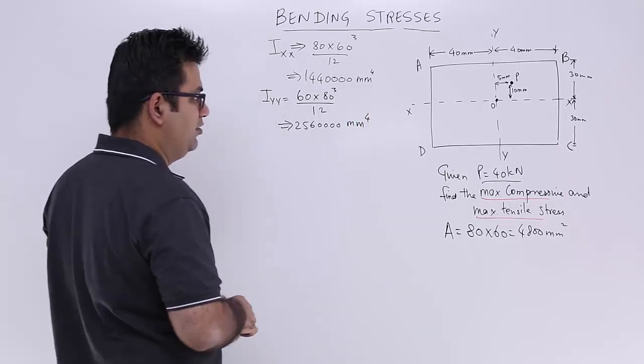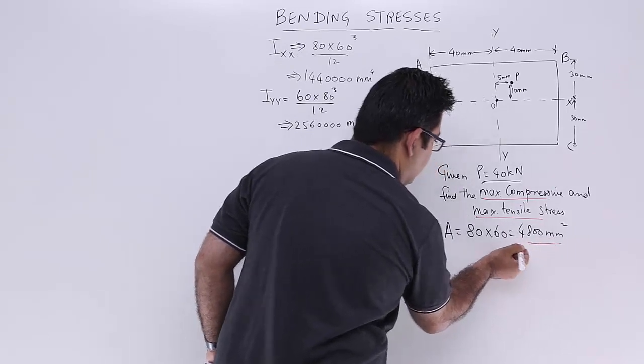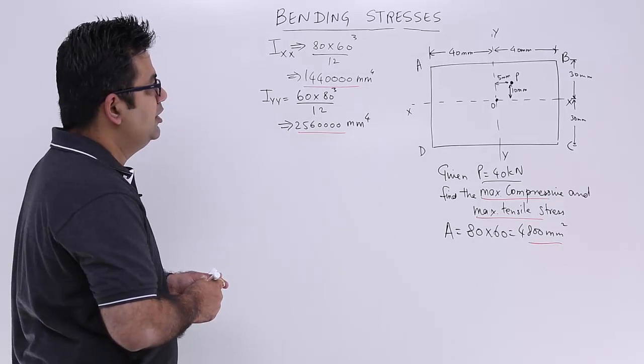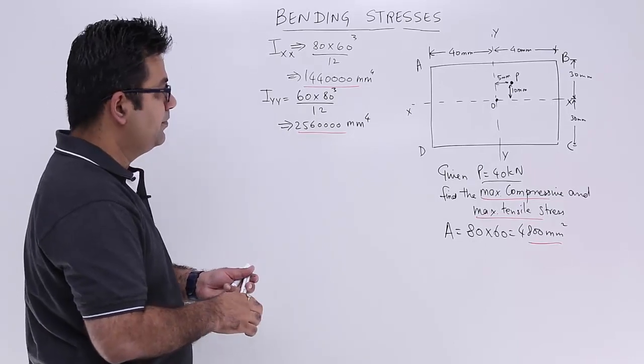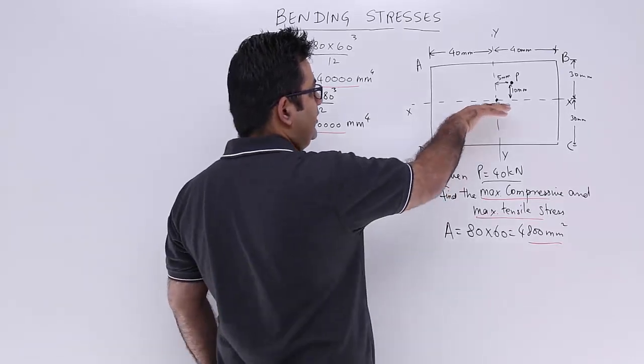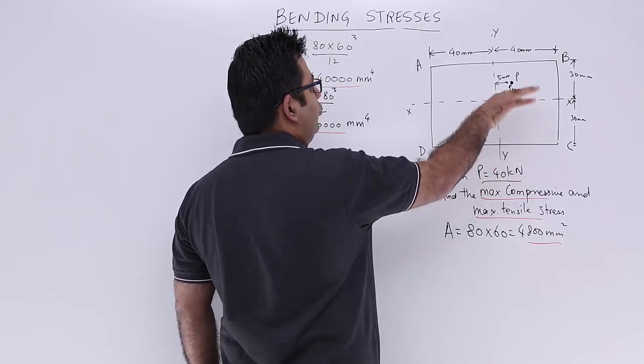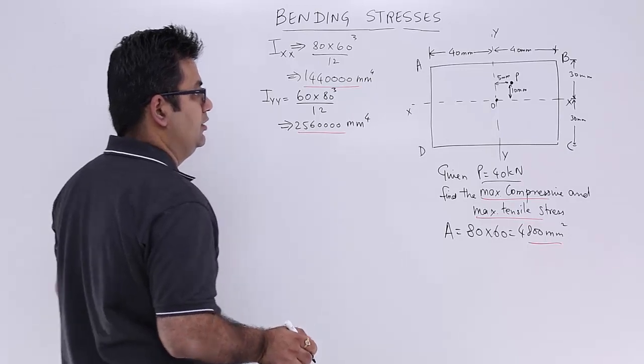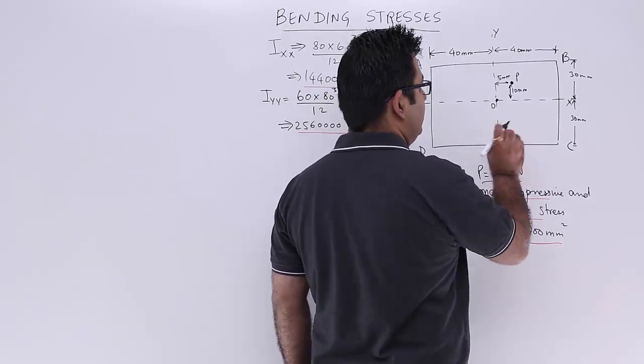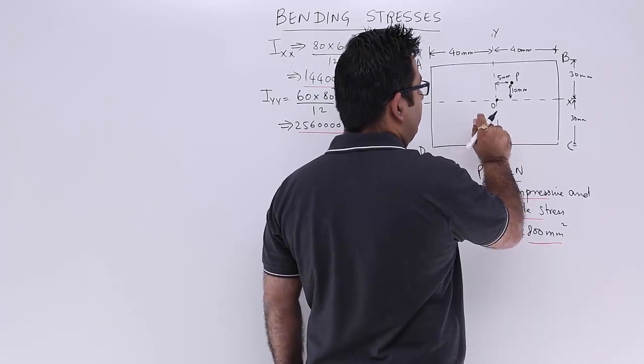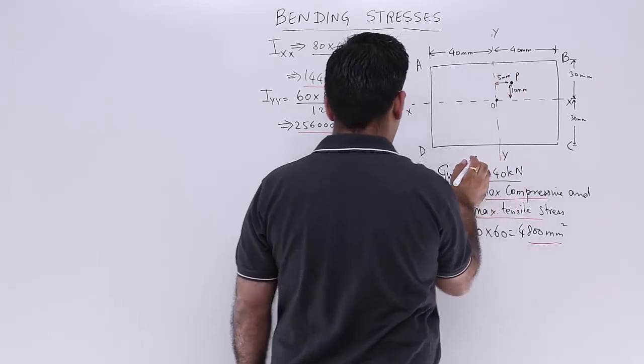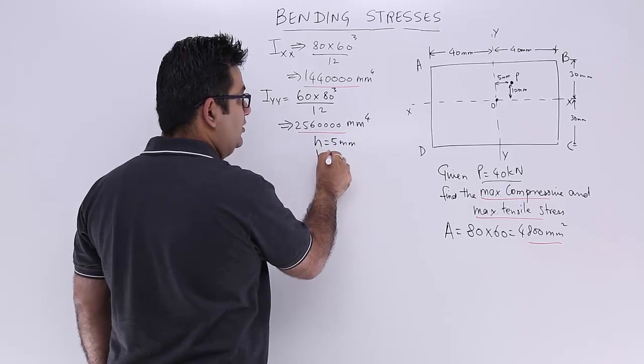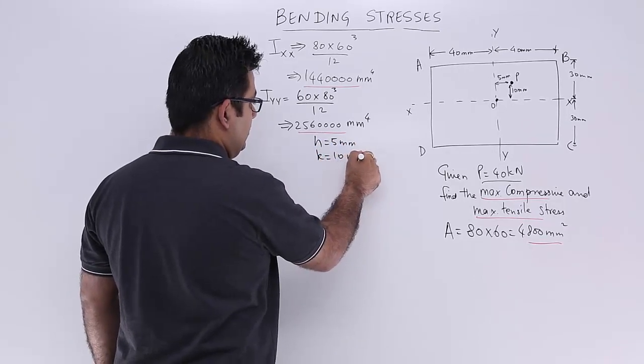So I have found out three mathematical values: one is the area, one is Ixx, and Iyy. The bending is going to take place about OX and about OY. Let me give a few more values. This 5 is H and 10 is K.